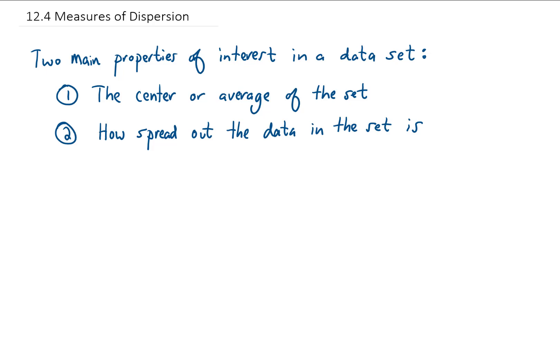In the previous video, we looked at two main properties of interest for a data set. The first was the center or average value, which we called measures of center. In this video we're going to talk about the second property: given a data set, how spread out is the data? We call this measures of dispersion.